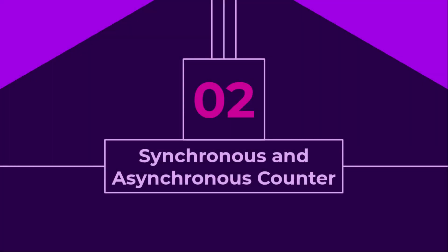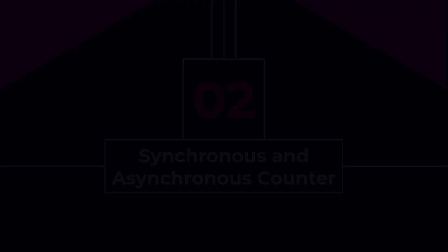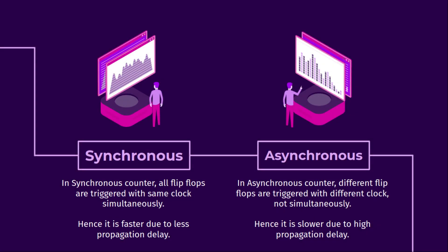In this subsection, we will learn the difference between synchronous and asynchronous counters. In a synchronous counter, all flip-flops are triggered with the same clock simultaneously — hence it is faster due to less propagation delay. While in an asynchronous counter, different flip-flops are triggered with different clocks, not simultaneously — hence it is slower due to high propagation delay.